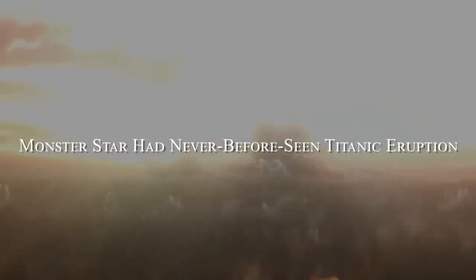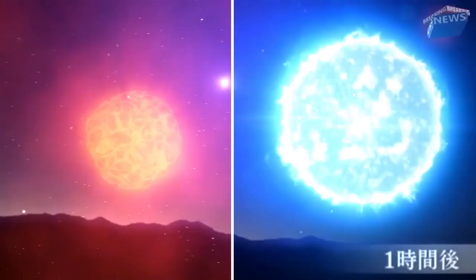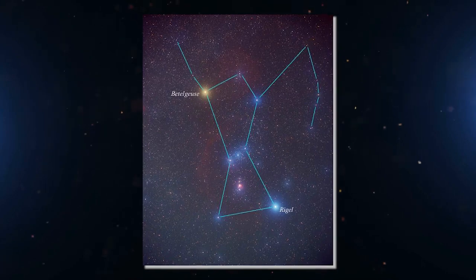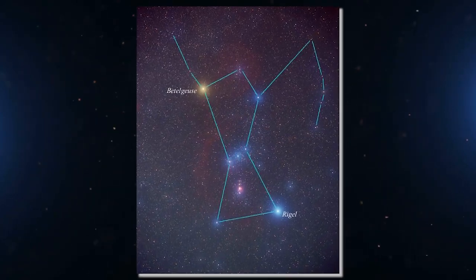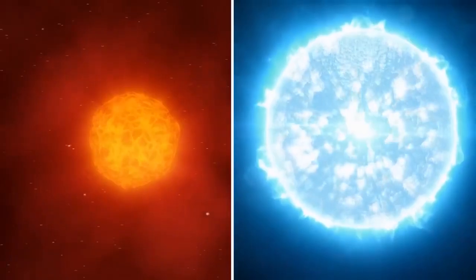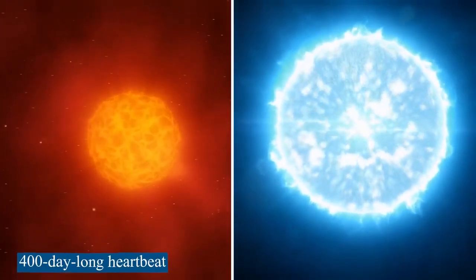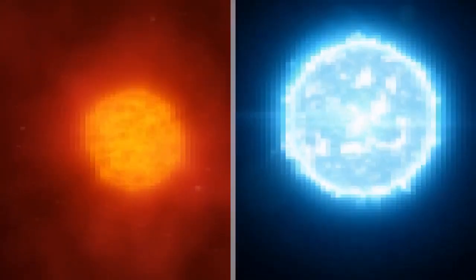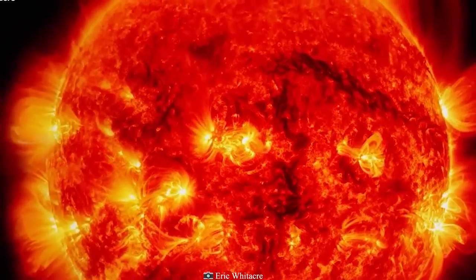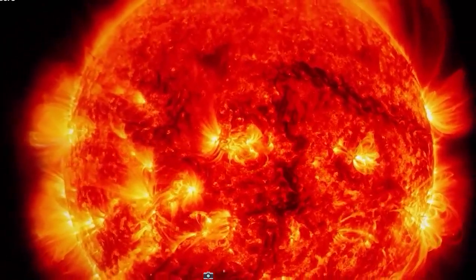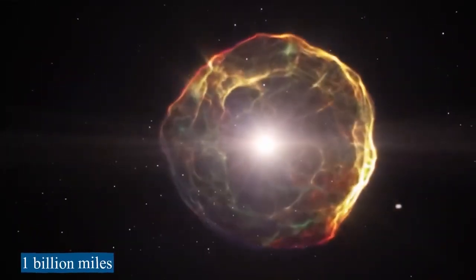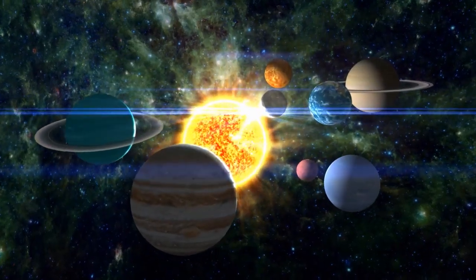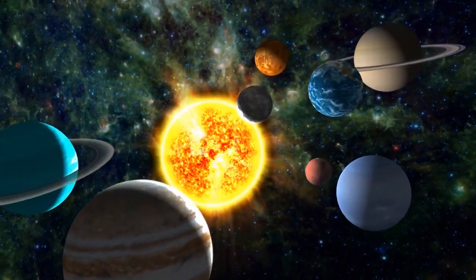Monster Star had never before seen Titanic eruption. The star Betelgeuse looks like a brilliant ruby-red twinkling spot of light in the upper right shoulder of the winter constellation Orion the Hunter. But when astronomers look at it up close, they see a monster with a 400-day-long heartbeat and regular pulsations. This old star is called a supergiant because it has grown so big that its diameter is about 1 billion miles. If you put it in the middle of our solar system, it would reach as far as Jupiter's orbit.